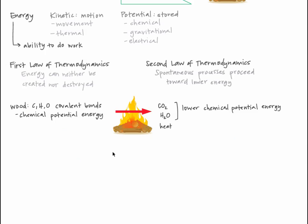Think about a piece of wood. Wood is made of lots of carbon, hydrogen, and oxygen atoms covalently bonded together, and these covalent bonds have chemical potential energy. When wood burns, those bonds are broken, which releases energy and forms carbon dioxide and water vapor. The bonds in these molecules are also covalent, but they have lower chemical potential energy.